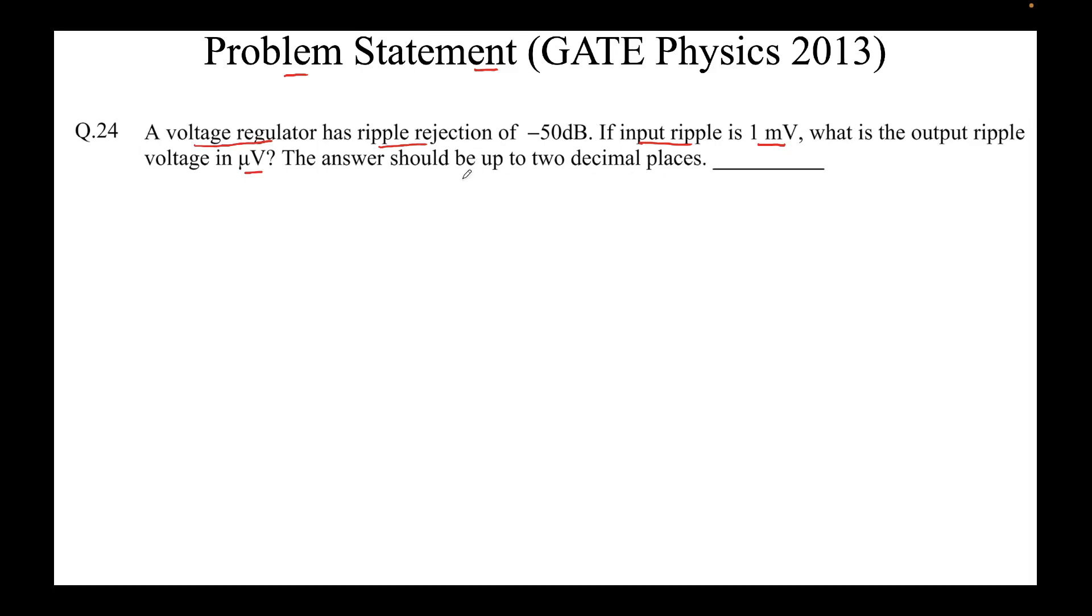First, before we try to solve this problem, let us understand what does ripple rejection actually mean. Let us say that this is a black box and we are feeding some input signal to this. This is a device, any device, it does not matter for our purposes, and we have an output. Now, let us say the input that we are feeding is noisy. So, let us say this is the input that we are feeding.